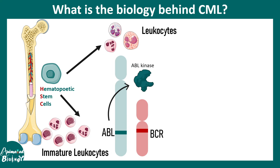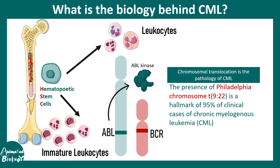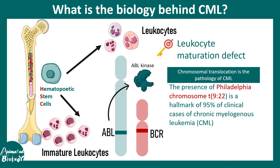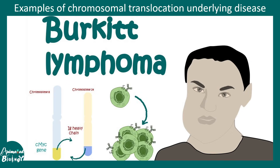Too much ABL kinase is the key driver of this uncontrolled proliferation. Overall, we can understand that the chromosome 9 to 22 translocation is the key pathology of chronic myelogenous leukemia.